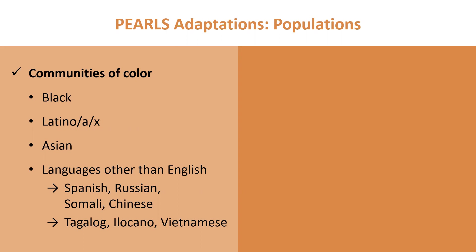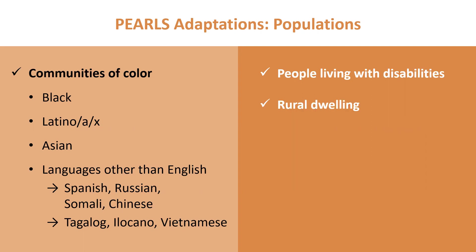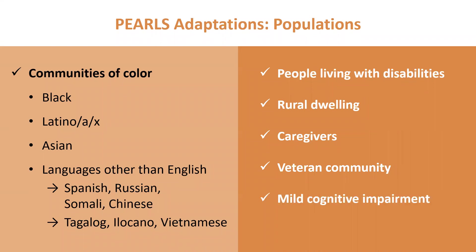Other populations the model has been adapted for include people living with disabilities of all ages, such as those with vision and hearing impairments or physical limitations. People living in rural settings — the model was originally developed in a metropolitan area and has since been delivered in rural parts of counties and other parts of the country. We've done PEARLS with caregivers for people living with dementia and other conditions, with the veteran community including veterans themselves as well as their widows and spouses, people living with mild cognitive impairment, and other underserved populations such as people experiencing homelessness.